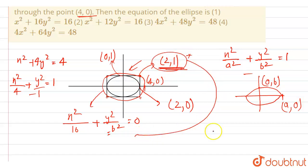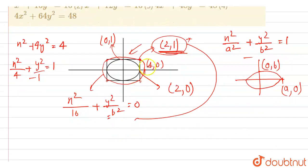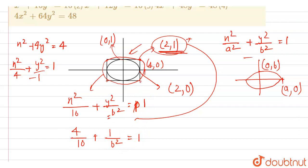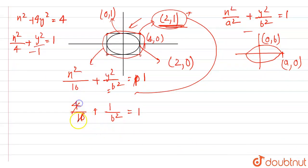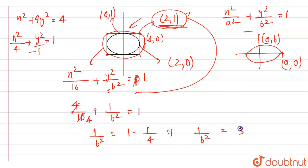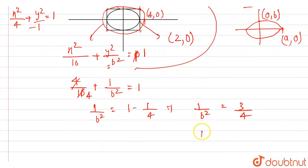Putting the point (2, 1) into the bigger ellipse equation: x = 2, so 4/16 + 1/b² = 1. This gives 1/b² = 1 − 1/4 = 3/4. Therefore b² = 4/3.